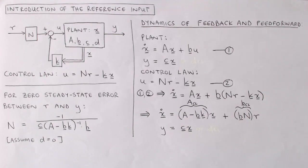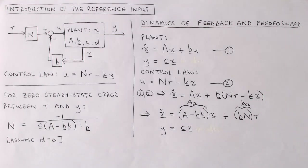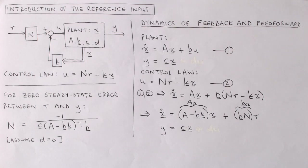An important thing to note is that the calculation of n depends on the system matrices a, b and c. If the model of the system is inaccurate, the value calculated for n might therefore not cause the output to track the reference input perfectly in steady state.